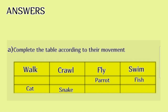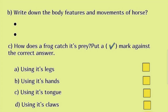Answers. A. Complete the table according to their movement. Walk: dog, cat. Crawl: crocodile, snake. Fly: parrot, crow. Swim: fish, wade.